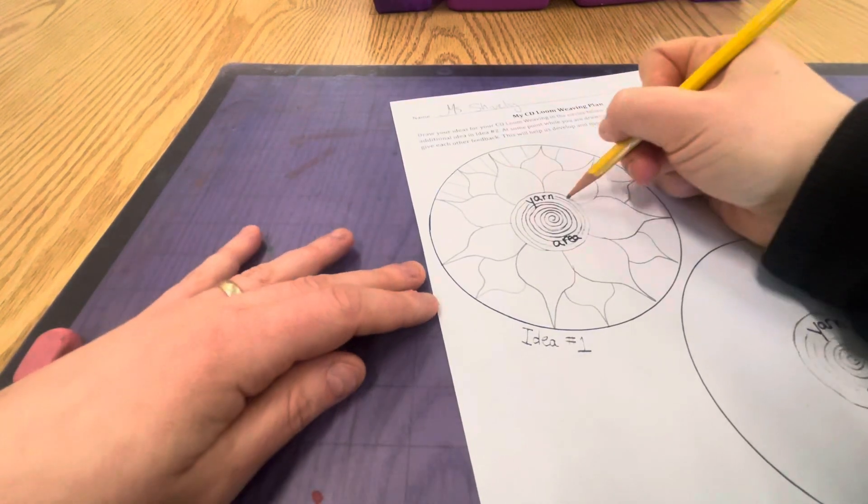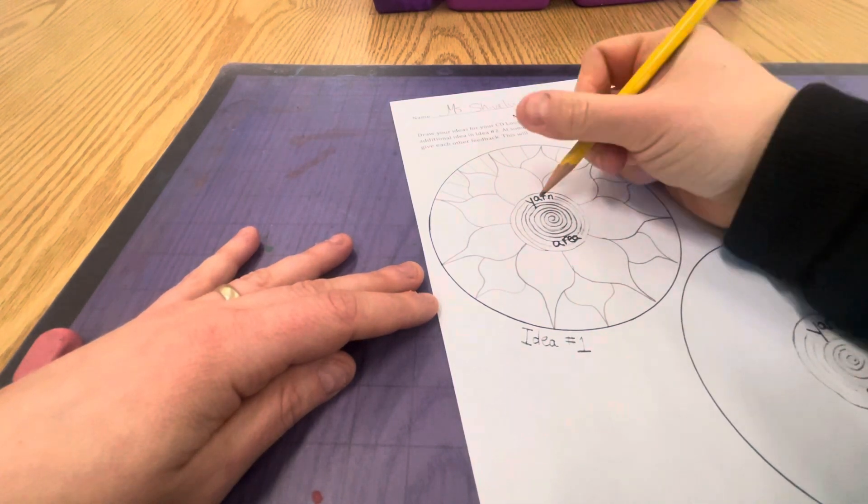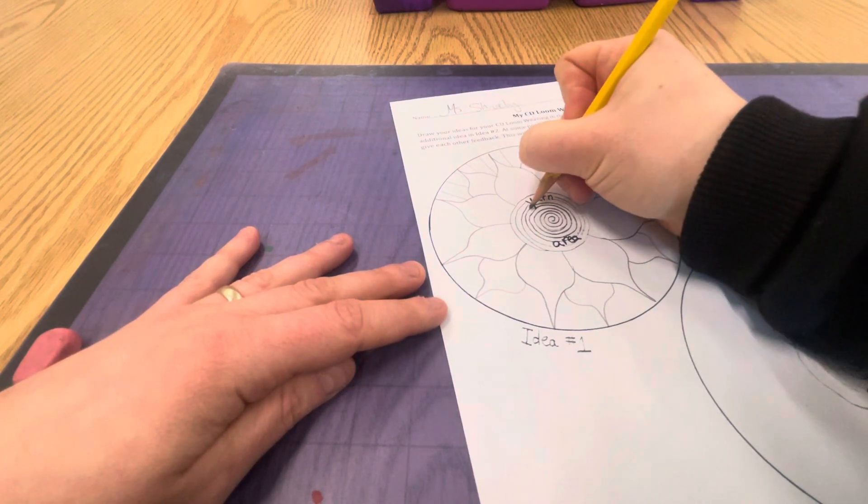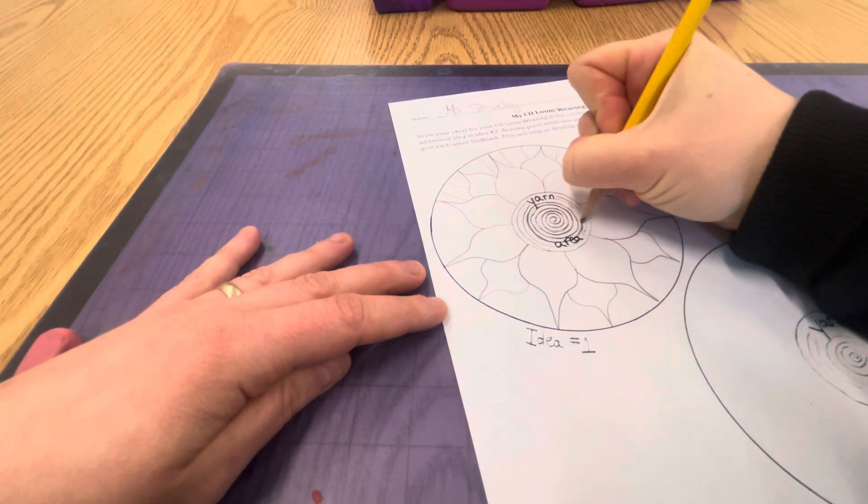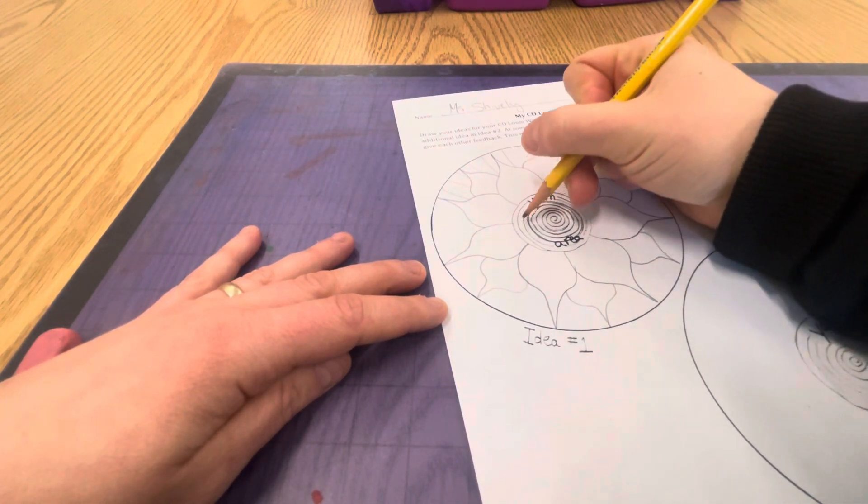When you consider this area, this is where you're going to be actually doing your weaving. This is the yarn area. You can choose up to two different colors for this part. So I'm going to add a line where I want to change colors. I'm going to do one color in here and a different color over here.